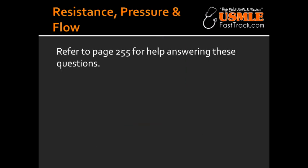What is the equation for the change in pressure? The equation for change in pressure is delta P equals Q times R, where Q stands for flow and R stands for resistance. The change in pressure is similar to Ohm's law, which is delta V equals I times R.